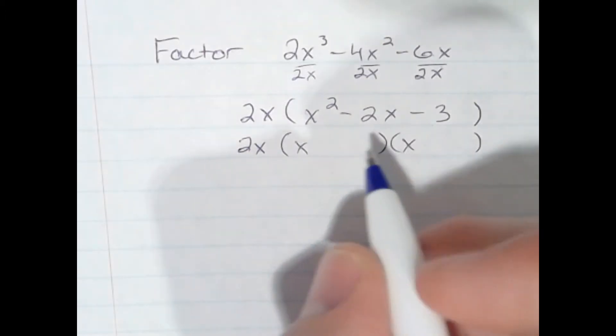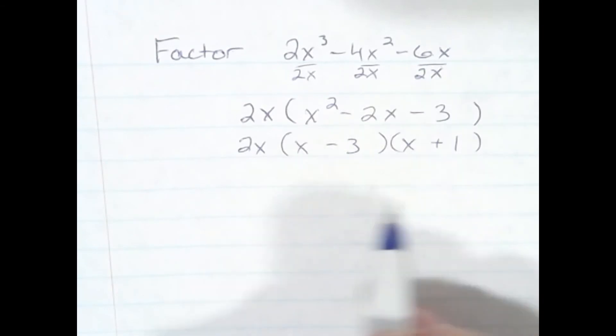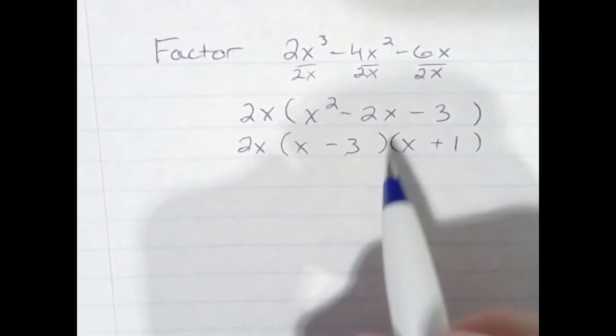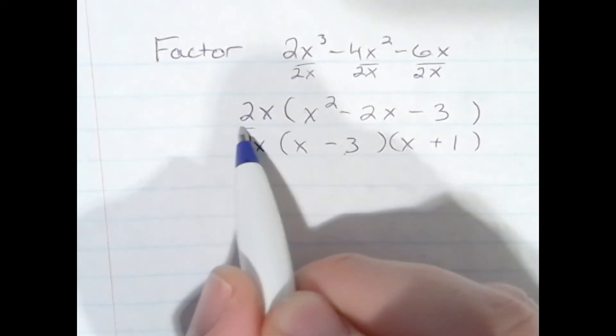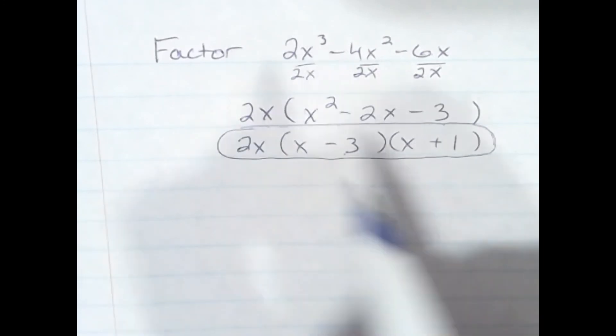Well, if I take minus 3 and plus 1 and multiply them, I will get negative 3. If I added them together, negative 3 plus 1, I would get negative 2. So that tells me that is the correct pair in order to write the correct factorization. Our final answer is 2x times the quantity x minus 3, quantity x plus 1.